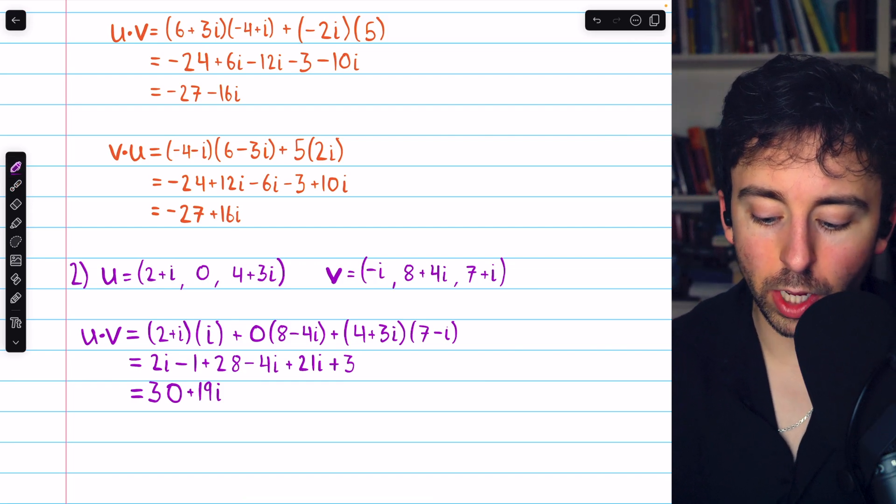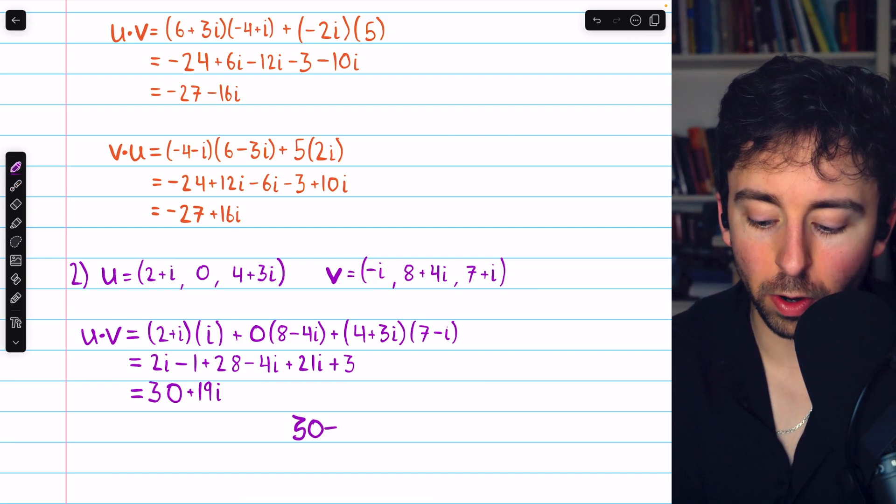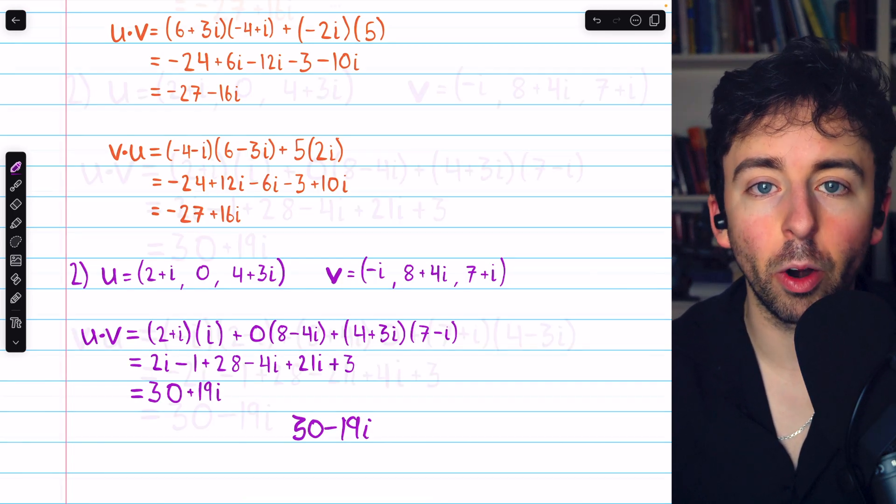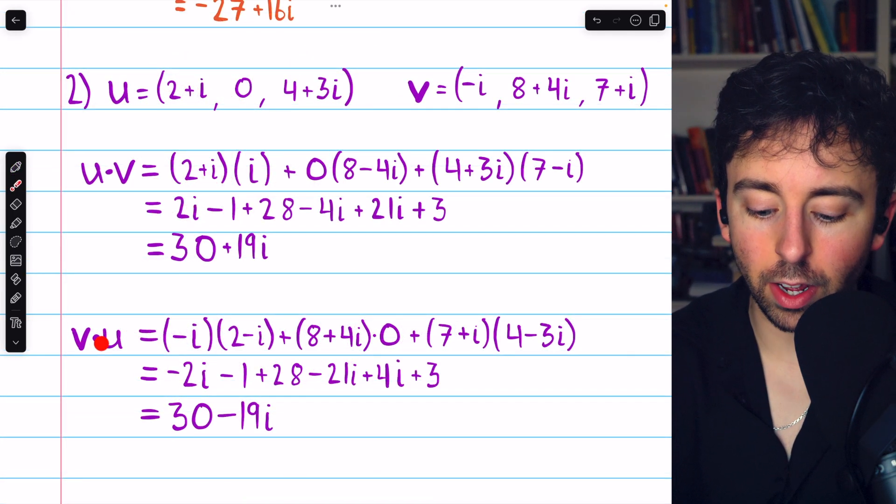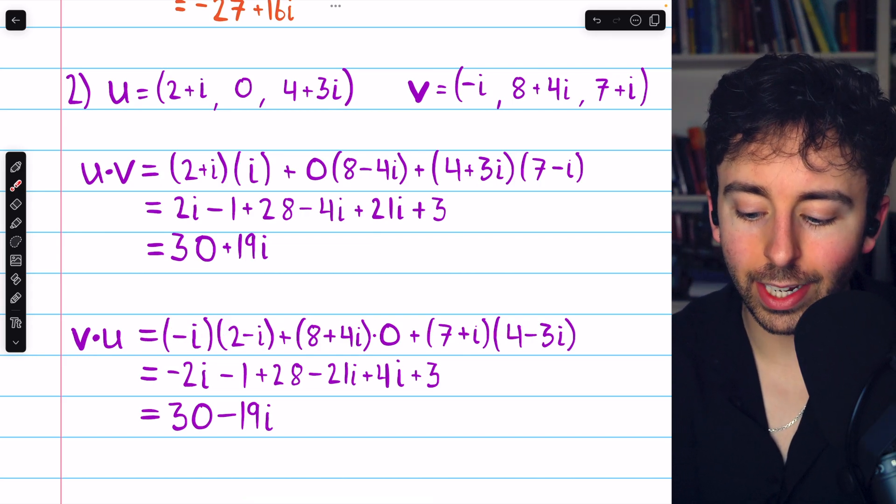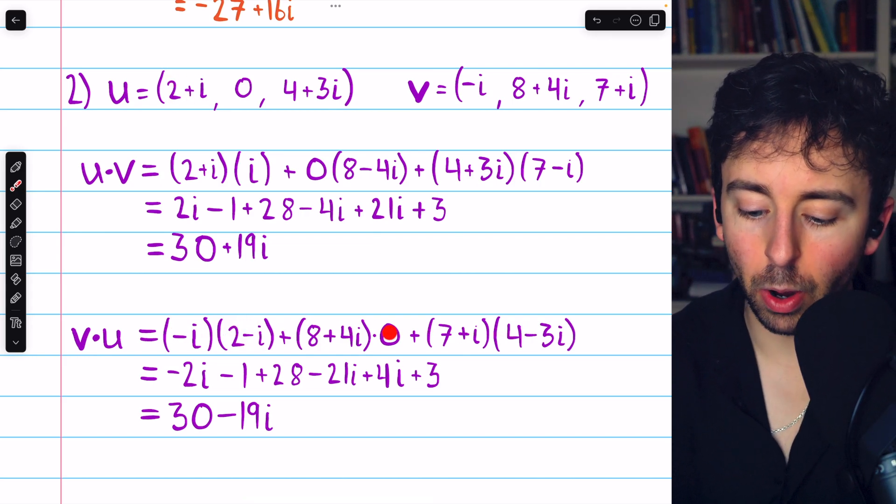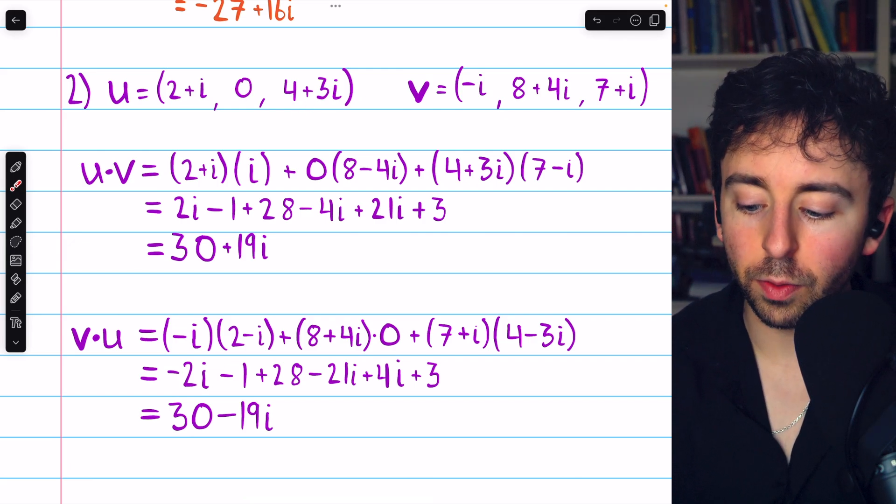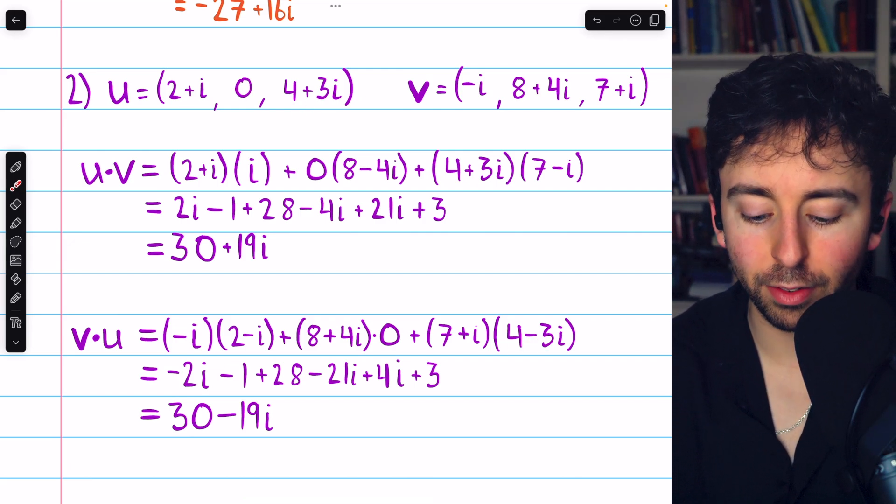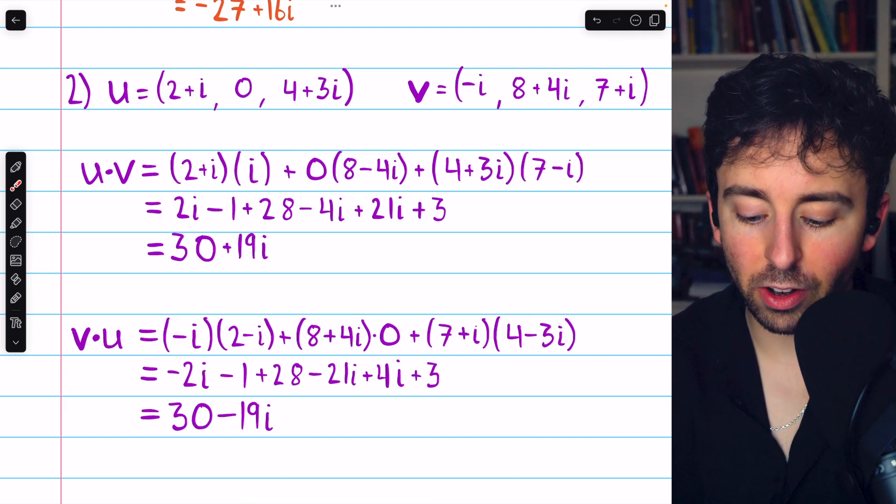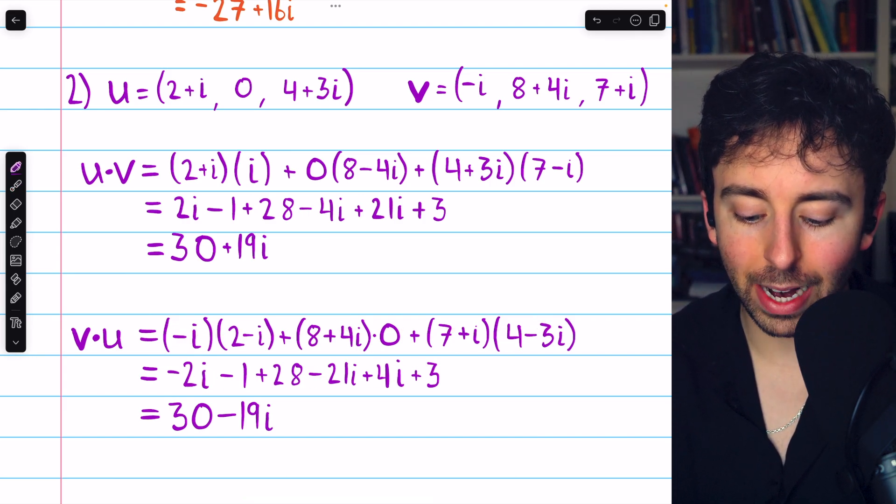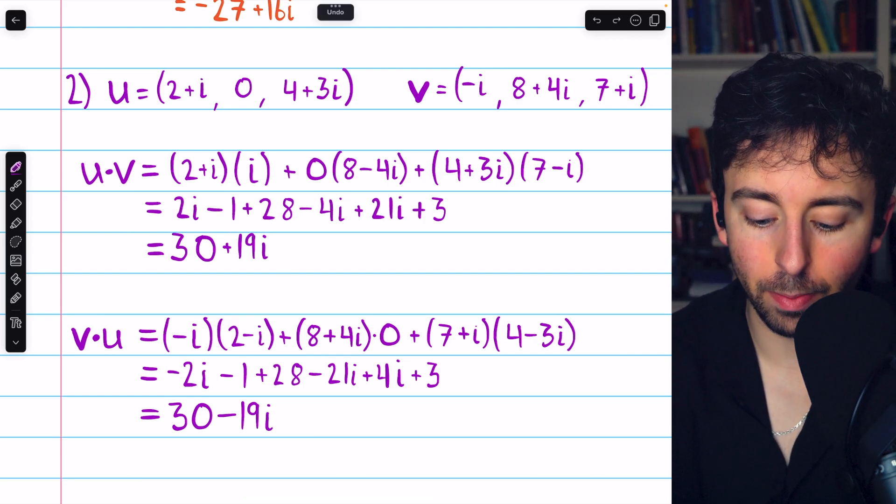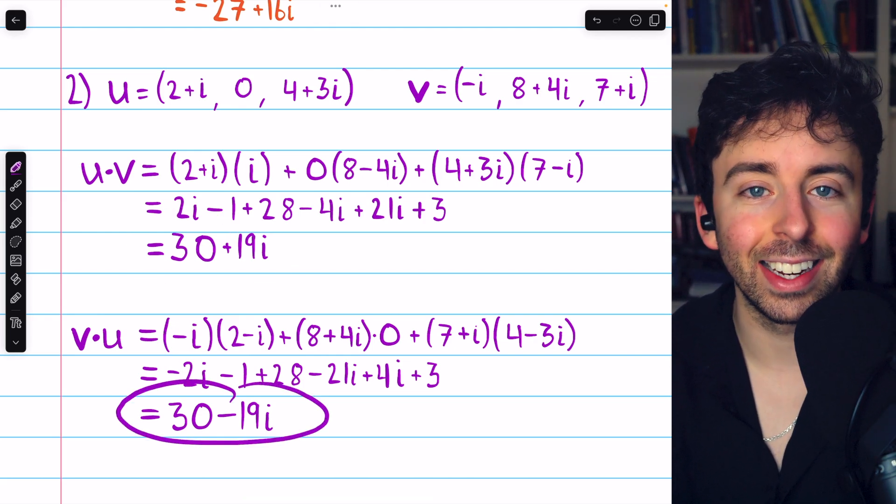Now, once we switch the direction, we already know that our answer will be thirty minus nineteen i, but if we go through the computations, we can check our work. So, going the other direction, v dot u looks like this. You can see that now we're taking the conjugates of the components of u. Conjugate of zero is just zero. Conjugate of four plus three i is four minus three i. Do all of the multiplication, we get here, combine like terms, and as expected, we get the conjugate of thirty plus nineteen i. Namely, thirty minus nineteen i.